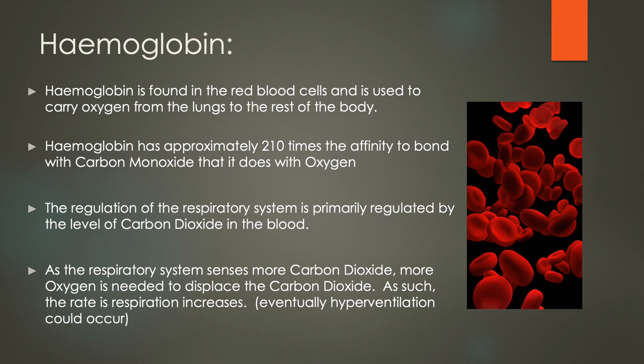The regulation of the respiratory system — effectively how quickly we're breathing in and out — is regulated by the level of carbon dioxide in the blood, which is the waste gas. As our respiratory system senses more carbon dioxide, more oxygen is needed to displace it, so if we have more waste gas our breathing rate will increase. Eventually, if we don't get rid of enough waste gas, our breathing rate will continue to a point where hyperventilation would occur.